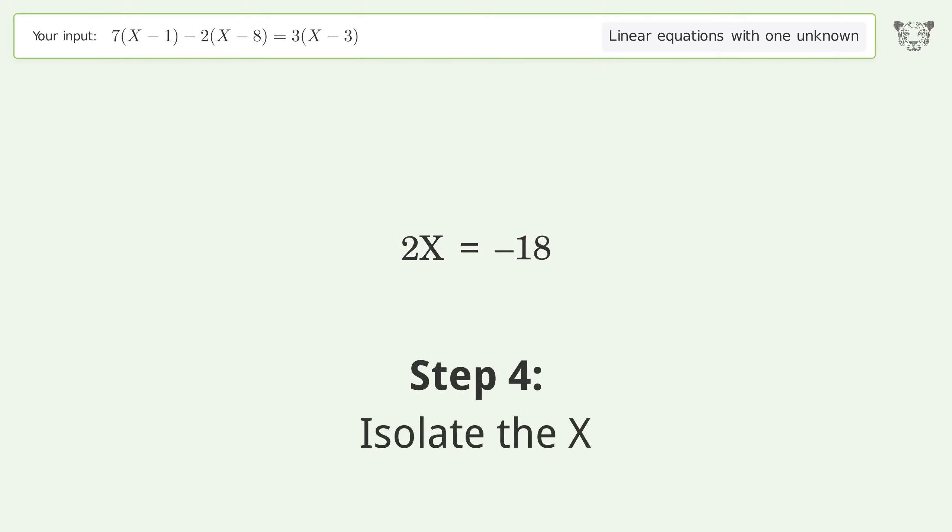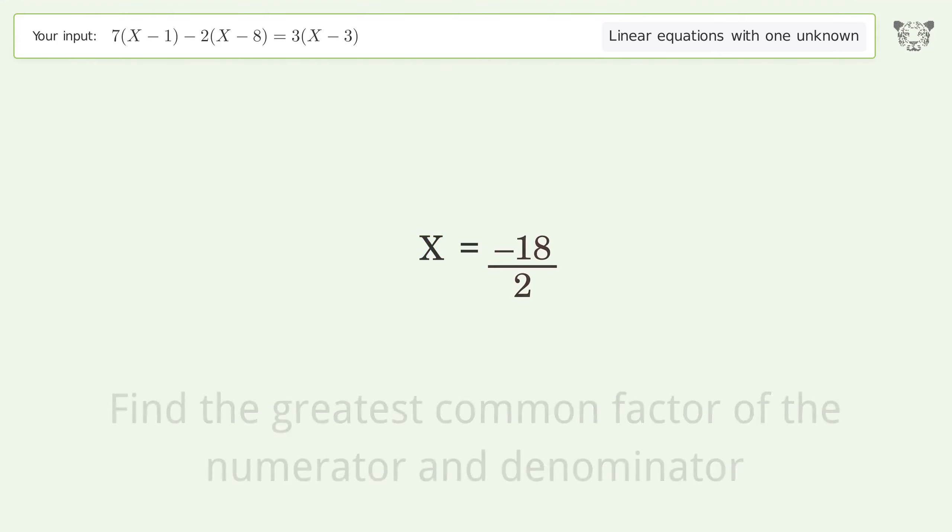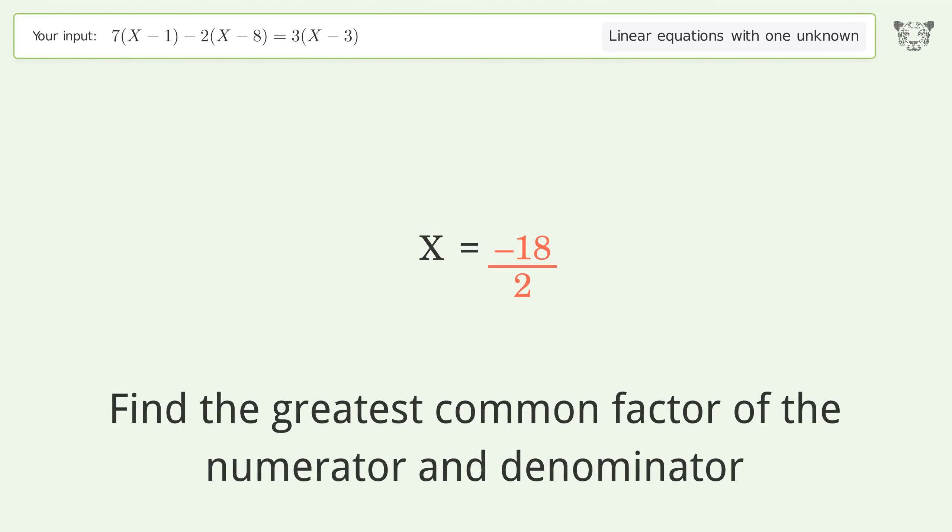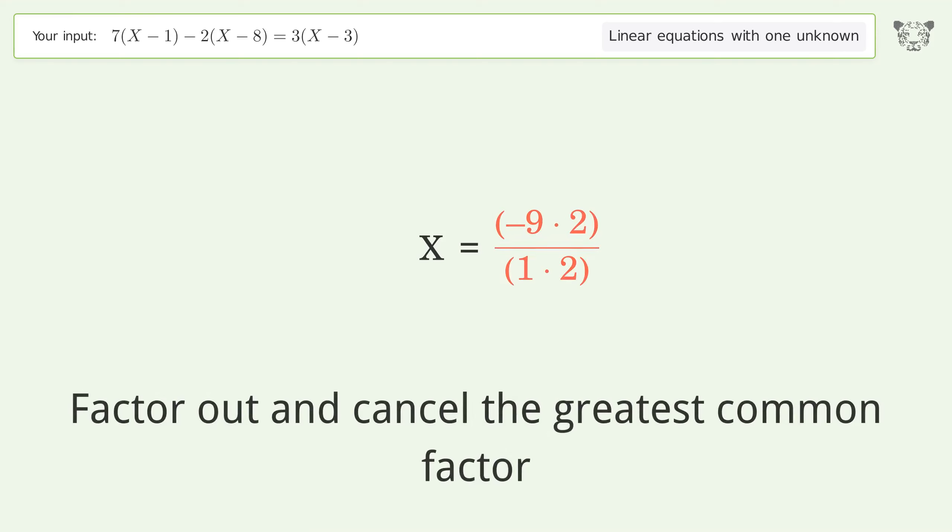Isolate the x by dividing both sides by 2. Simplify the fraction. Find the greatest common factor of the numerator and denominator, then factor out and cancel the greatest common factor.